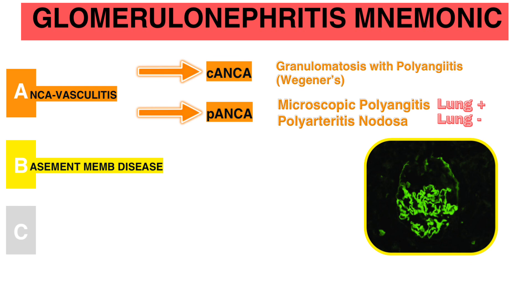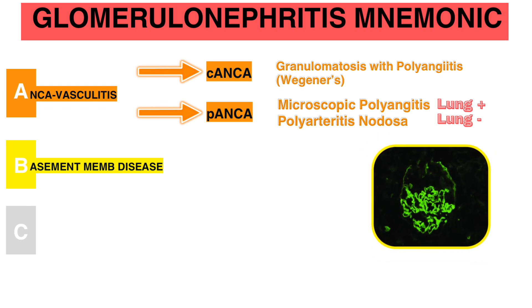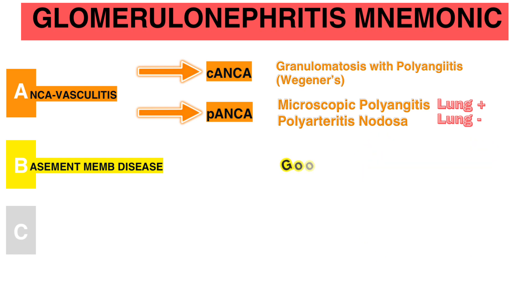Letter B for Basement Membrane Disease. Characterized by linear antibody deposits along the glomerular basement membrane. The classic example is Goodpasture syndrome, which can affect both kidneys and lungs, causing hematuria and hemoptysis.